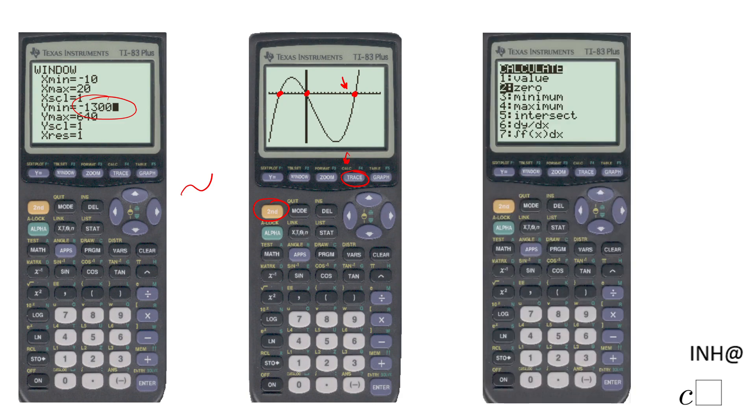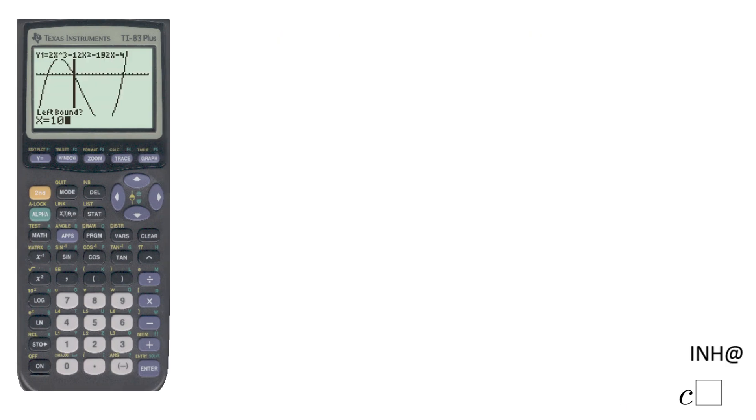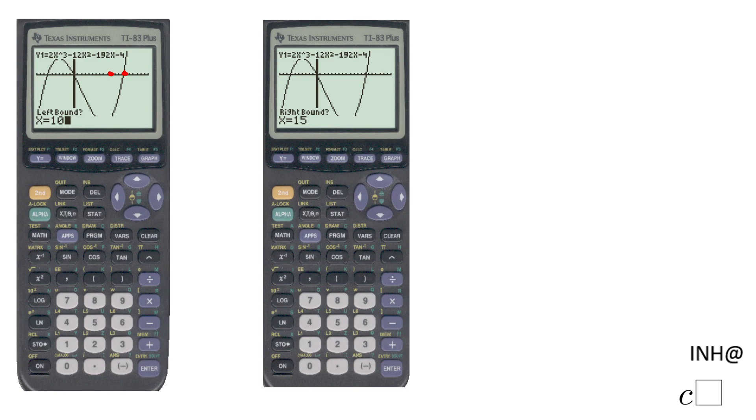You already notice I selected number two. You can use the number two on your calculator or you can use the down arrow menu and then click Enter. Once you do that, you're going to see Left Bound. In my case, the left bound is 10, which is somewhere here at the left of this x-intercept. And then click Enter and I'm going to get right bound.